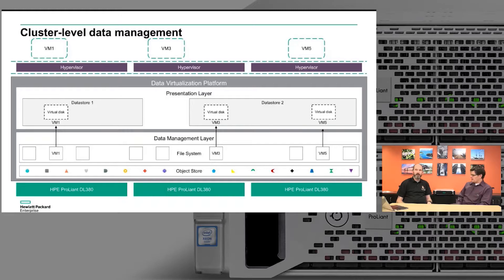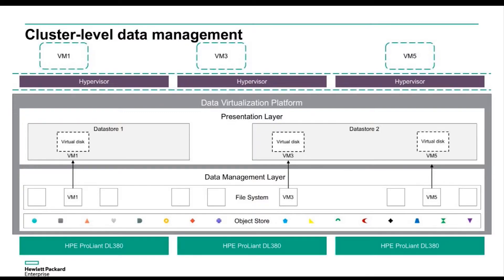The only other way to configure it is through a CLI command, since everything is managed through the hypervisor management. What you see here is the data virtualization platform living between the hypervisor and the actual hardware. Within that DVP, we have three different layers: the presentation layer, which is the interface the hypervisor uses, where the data stores and VMDKs live.